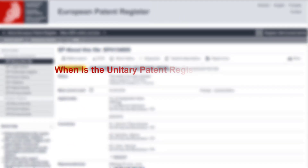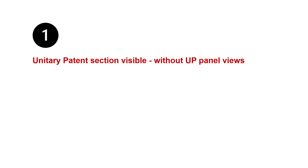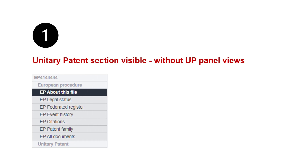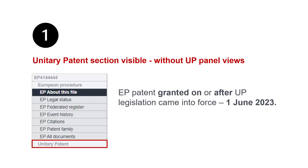But when is the Unitary Patent Register displayed? Let's take a look at the different scenarios. First scenario: the Unitary Patent section is visible without the corresponding UP panel views for European patents granted on or after the Unitary Patent legislation was enforced — in other words, for patents granted on or after the 1st of June 2023.